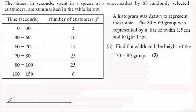Now it's not an accurate sketch but what I know is that if we look at the class interval from 30 to 60 we're told that it's represented by a bar of width 1.5 centimetres.